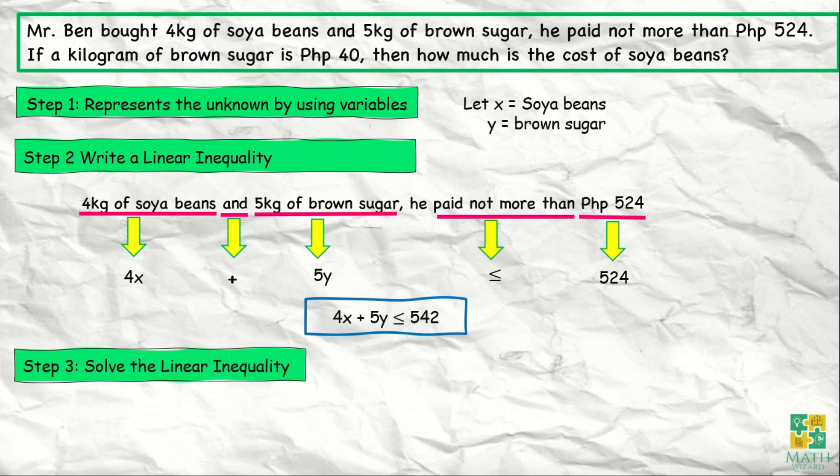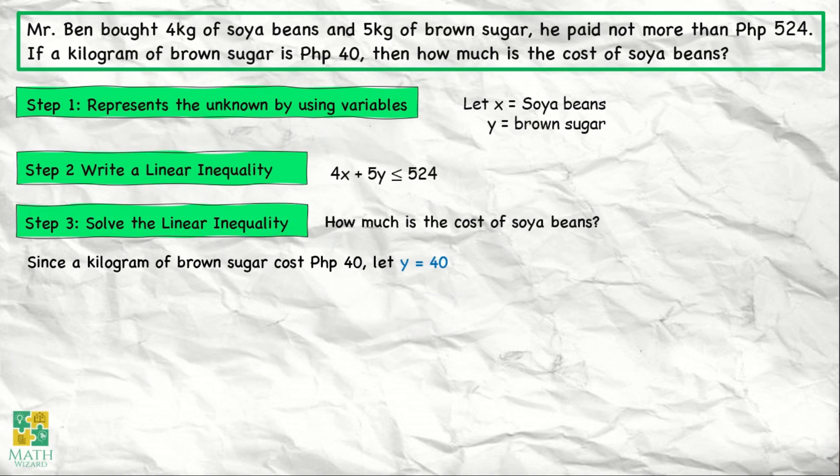For step number 3, we need to solve the linear inequality. The question is how much is the cost of soybeans? Since a kilogram of brown sugar costs 40 pesos, we let y equal to 40.